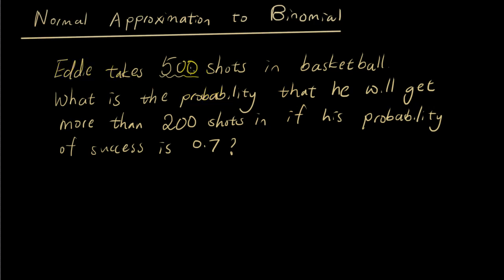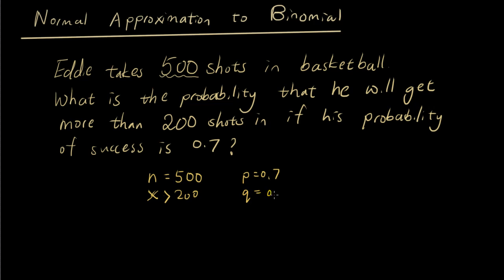In this situation, Eddie takes 500 shots in basketball, so we're going to have 500 trials. What is the probability that he will get more than 200 shots in? So x is bigger than 200, where x is the number of shots in. The probability of success is 0.7, so the probability of failure is 0.3.